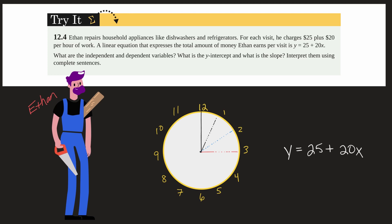So what are the independent and dependent variables? What is the y-intercept? And what is the slope? Interpret them using complete sentences.